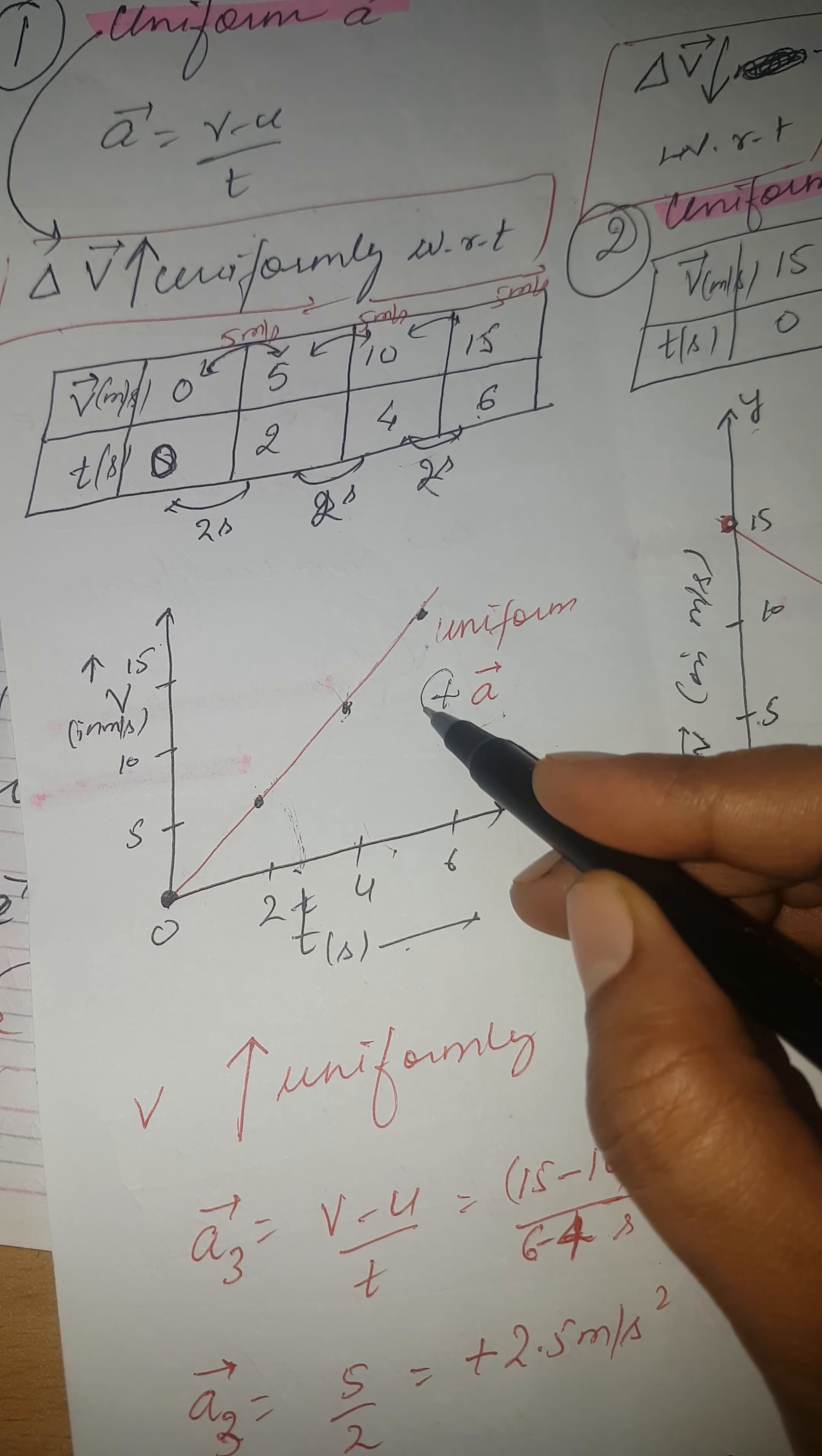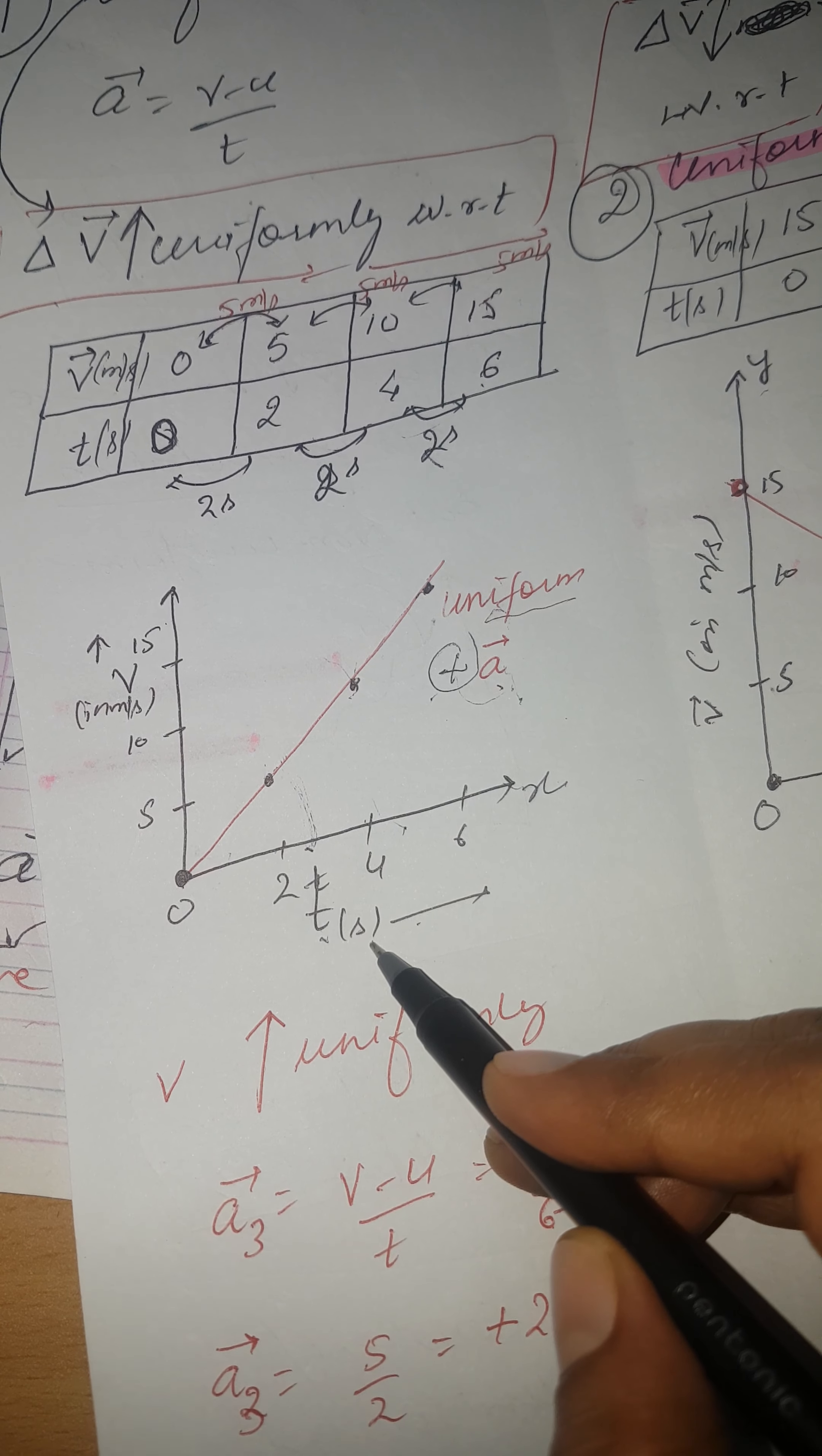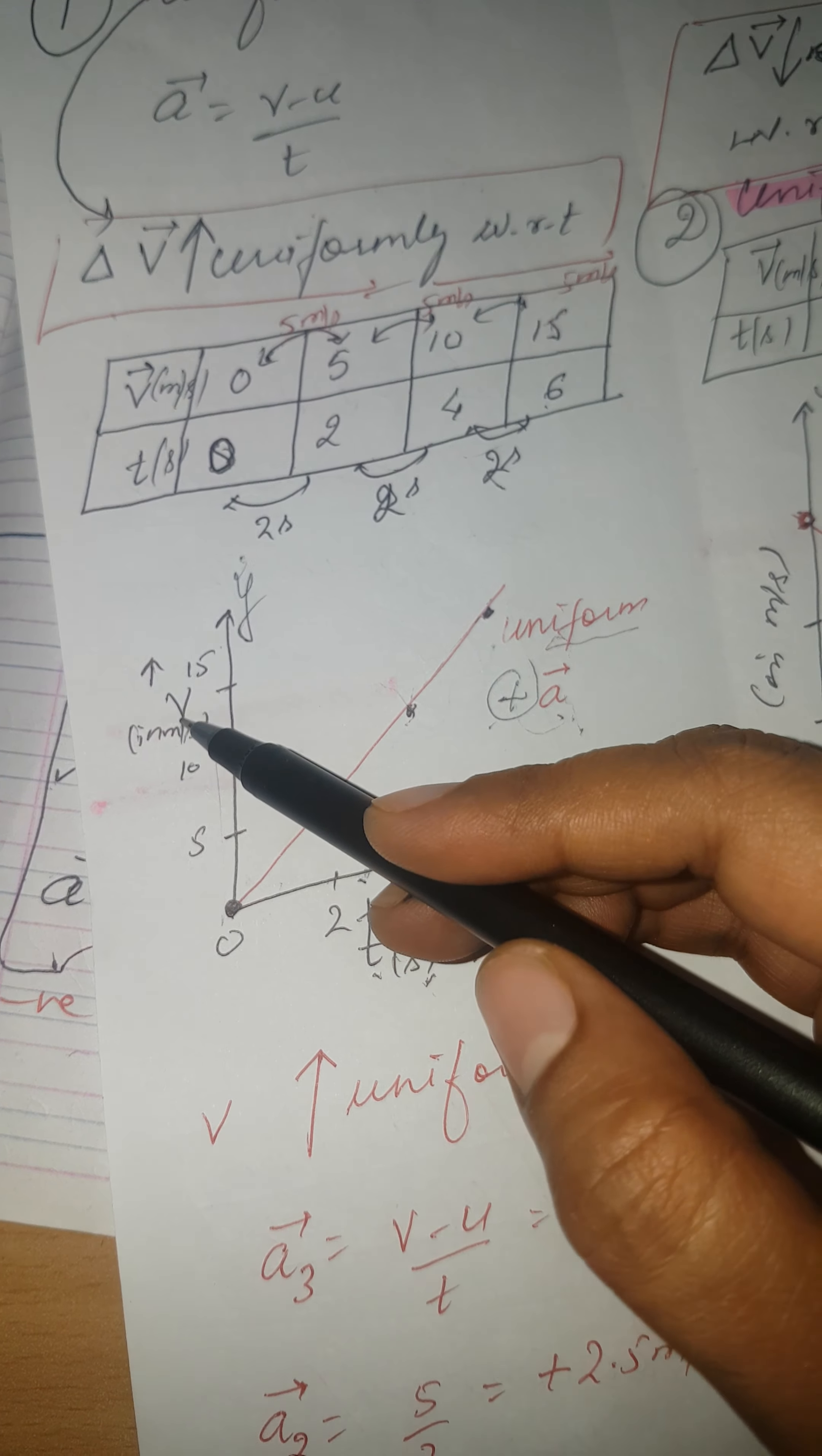Why this is uniform acceleration? Because velocity is increasing, so acceleration is positive. And velocity is increasing uniformly, so this is uniform positive acceleration. Make it very clear students: whenever you are going to plot a graph, time should be taken at x-axis and in whatever units you are going to measure time - second, minutes, hours - it must be given to you or it's your choice. You have to write that unit in the brackets.